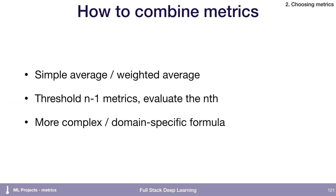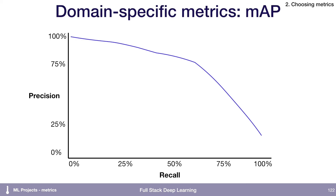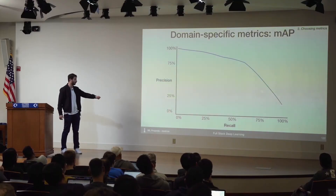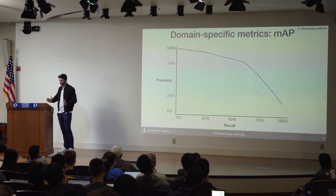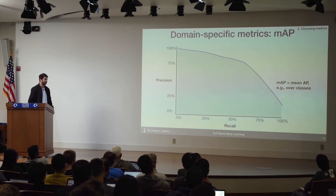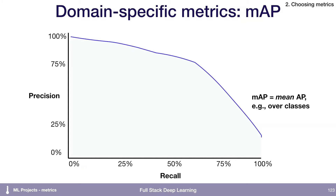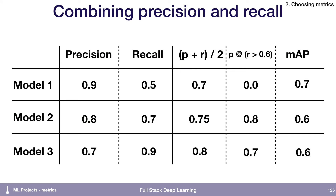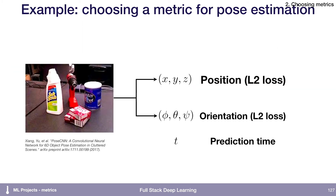There are also more complex or domain-specific formulas. For precision and recall, there's a metric called mean average precision (MAP). If you plot the trade-off between precision and recall — as you increase recall, precision decreases — and then look at the area under that curve, that gives you the average precision. Mean average precision is the average of the average precision taken over all of the classes you're doing prediction on. In this example, if we look at mean average precision, model one might jump out as being best.